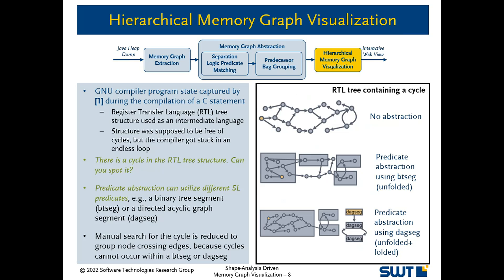Due to a bug in the GNU compiler, the RTL tree structure might contain a cycle which caused the compiler to get stuck in an endless loop. Spotting the cycle in a flat memory graph with no abstractions applied is tedious. Note that the predicate abstraction can employ different predicates. Using a DAG segment instead of a binary tree segment provides a much better abstraction. Note that cycles can neither appear within a binary tree nor a DAG segment. Hence, the corrupt edge leading to a cycle must be between two different groups.